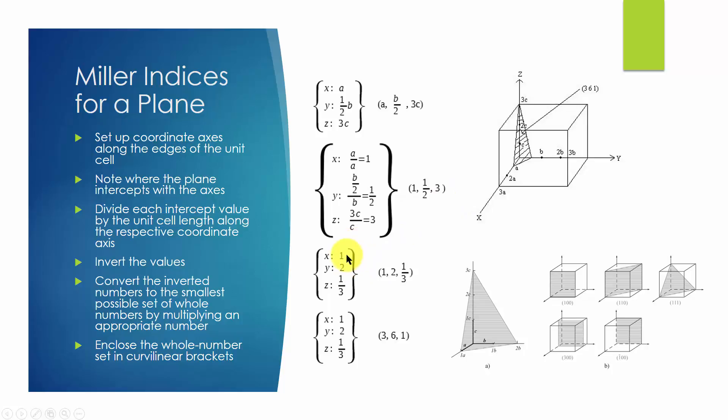Now we need to invert the values. So 1 over 1 is 1 for x axis, one over one half is 2 for y axis, and 1 over 3 is one third for z axis.